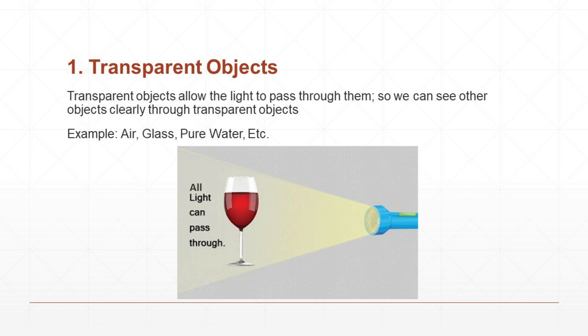Transparent objects allow the light to pass through them, so we can see other objects clearly through transparent objects. Examples: air, glass, and pure water. Looking at the picture, a torch light is lit in front of a glass, and we can see the light through it. So glass is a transparent object.